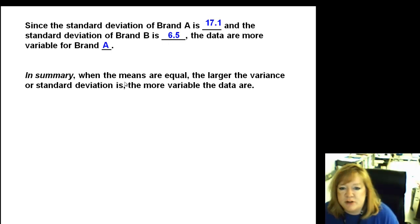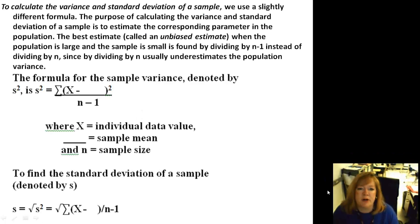In summary, when the means are equal, the larger the variance or standard deviation is, the more variable the data are. So now we're on to calculating these for a sample. And it has a slightly different formula, but it's called the best estimate when the population is large and the sample is small. And it's found by dividing by n minus 1 instead of n. And here's s squared. That's how they denote variance. x is the individual data item, and this x with a hat on it is the sample mean. n is the sample size. Standard deviation is found the same way. We just take the square root of the variance.